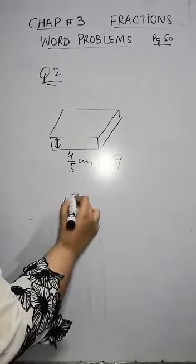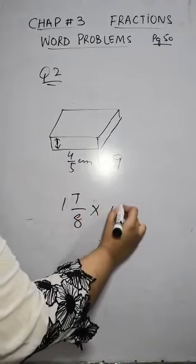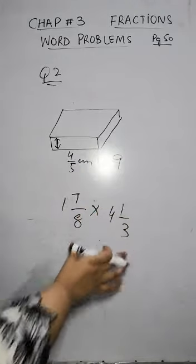You multiply one whole seven over eight by four whole one over three.